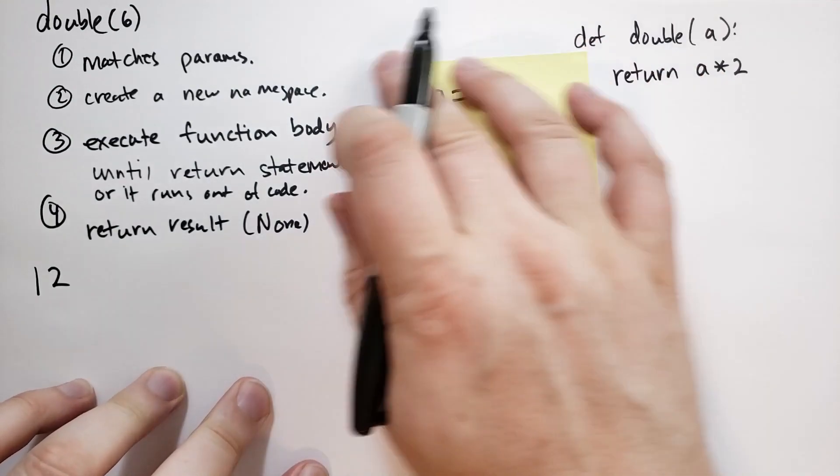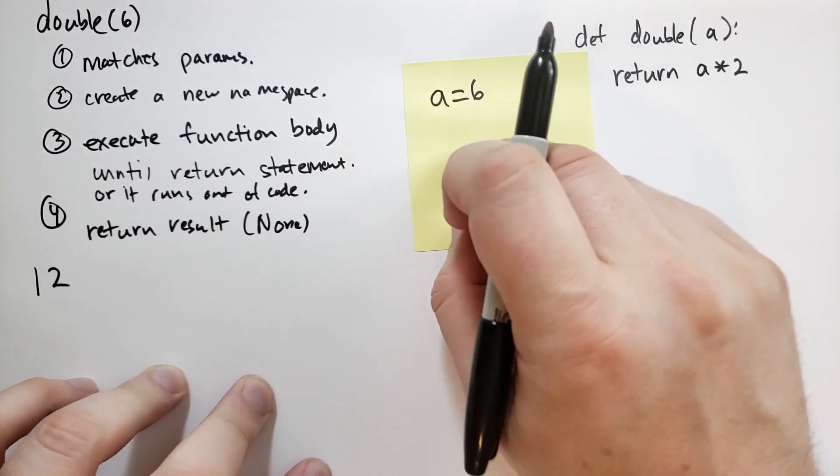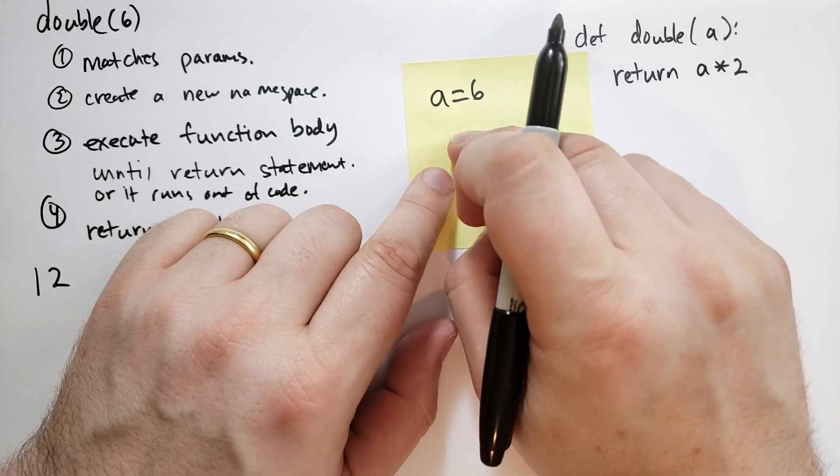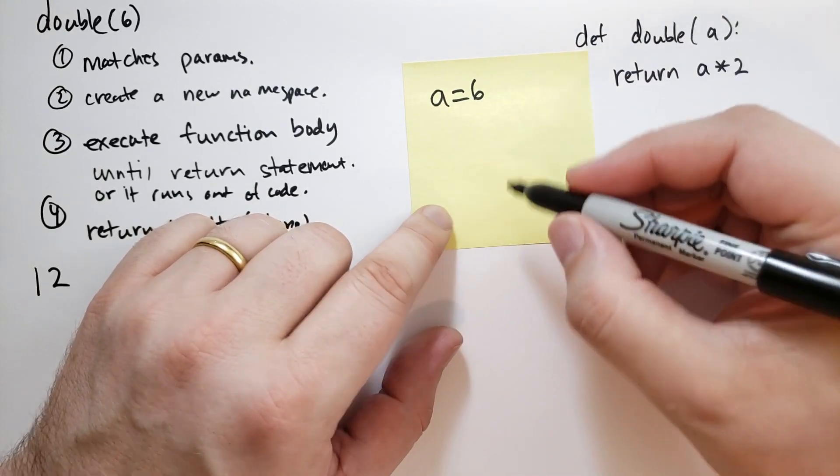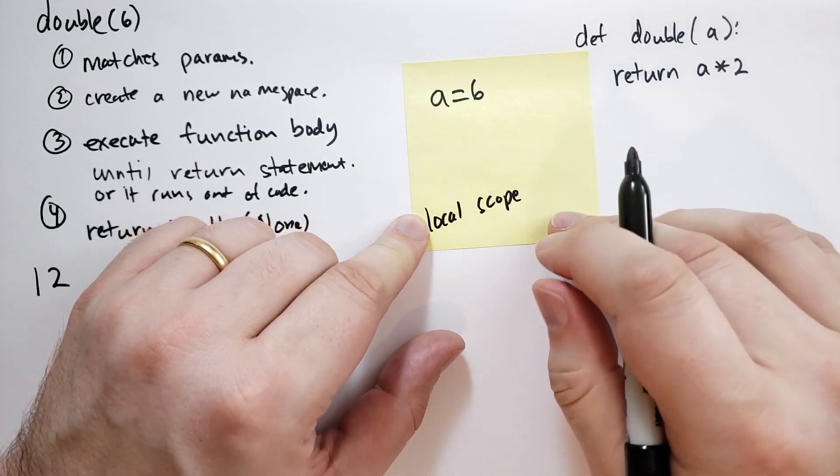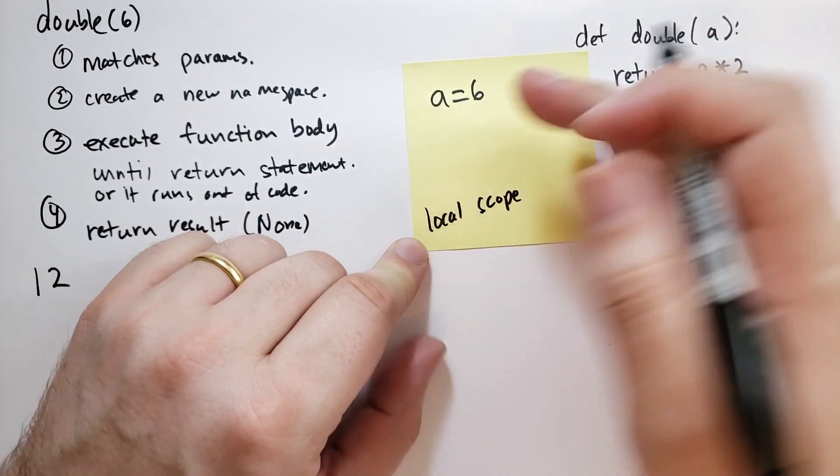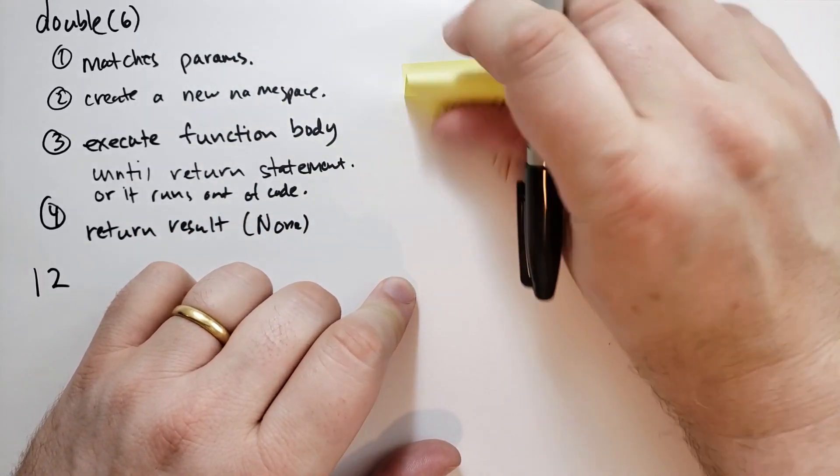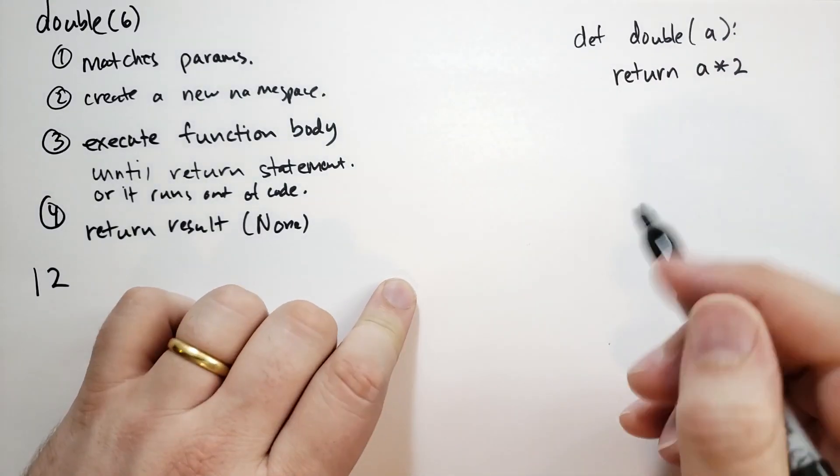That's what's going on. So you have to get this concept in your head that when you're calling a function, you're creating a new namespace. This is going to be called the local scope. And it overrides the global scope. So let me give you an example of what I mean by that.